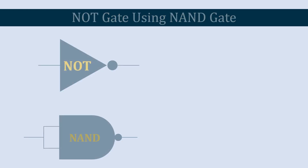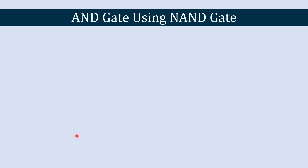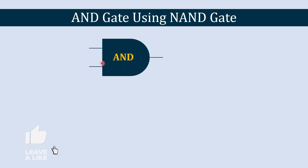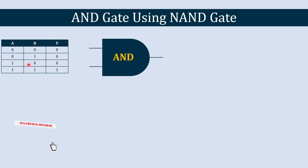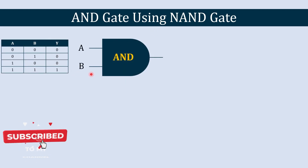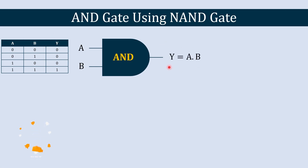Now we will go for the next gate — the AND gate. We are going to create an AND gate using a NAND gate. Here we have the AND gate with its truth table showing two inputs A and B, and the output Y = A·B. The equation of the NAND gate is Y = A·B̄.